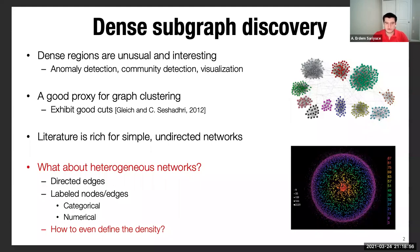Literature is rich for simple undirected networks with numerous methods. However, in order to handle heterogeneous networks where edges are directed and or nodes and edges have some labels, like categorical labels, numerical labels, it is not clear how to find dense subgraphs in those contexts. It's not even clear how to define the density to begin with.